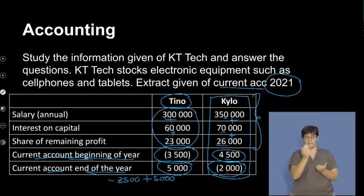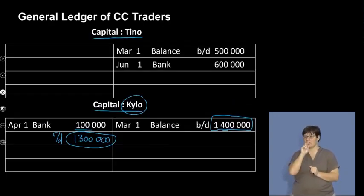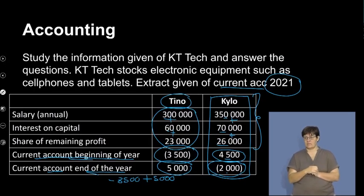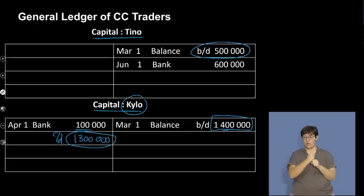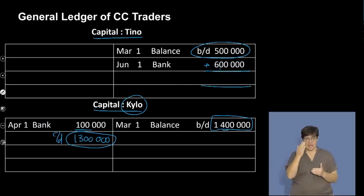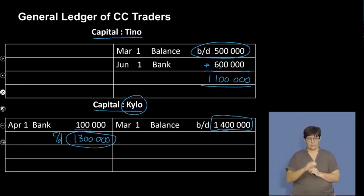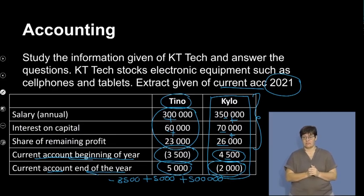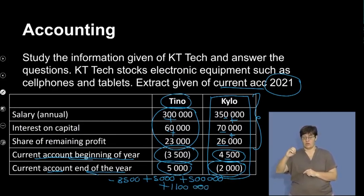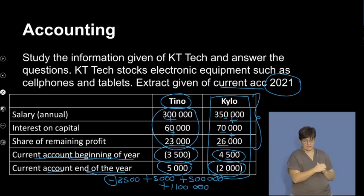Let's look at his balances in terms of capital. Looking at Tino, at the beginning of the year his capital balance is 500,000. Then at the end of the year, he contributed an additional 600,000, so his balance at the end of the year is 1,100,000. Let's take that through: plus 1,100,000. Now remember, I'm obviously going to add and divide by two, bearing in mind that there is a negative balance in terms of the current account.